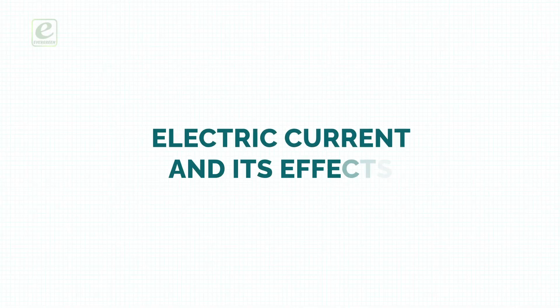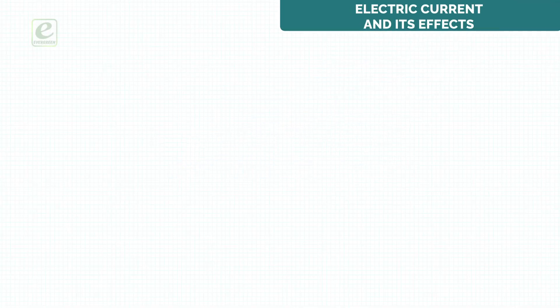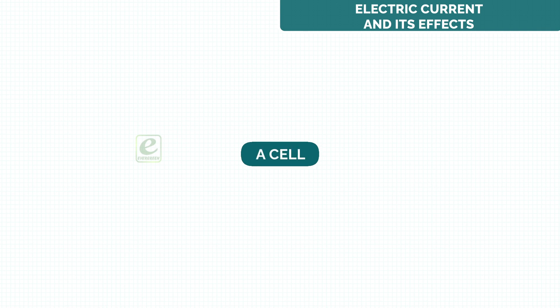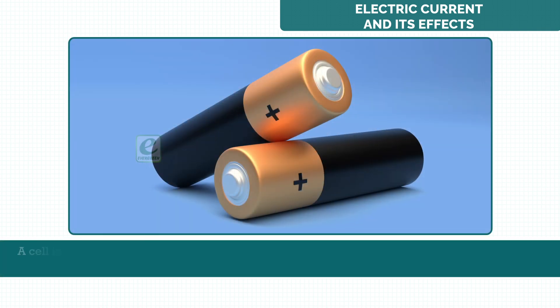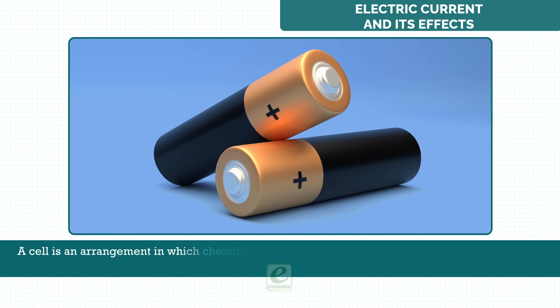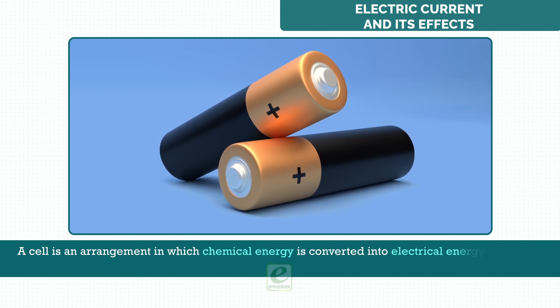Electric current and its effects. A cell is an arrangement in which chemical energy is converted into electrical energy.